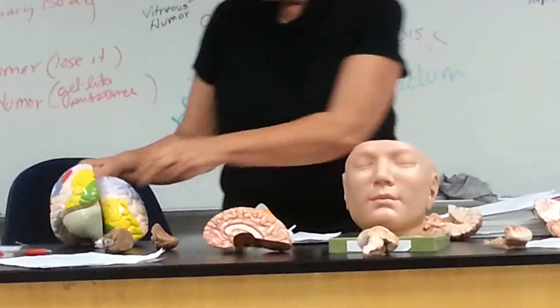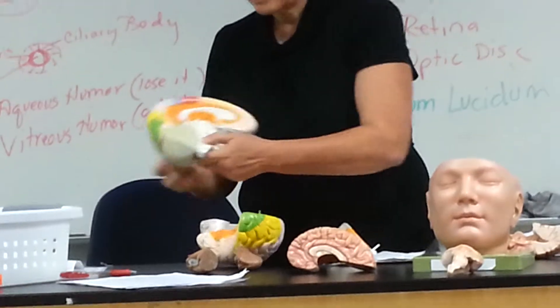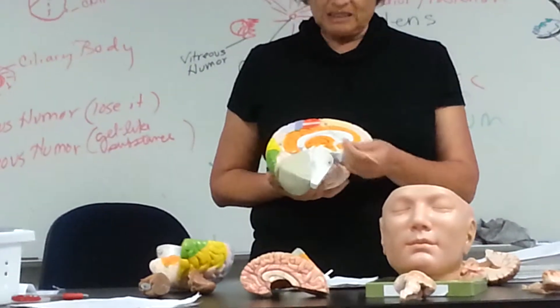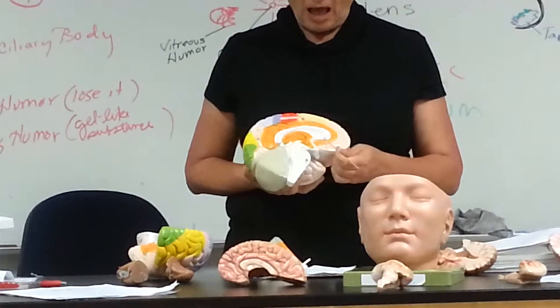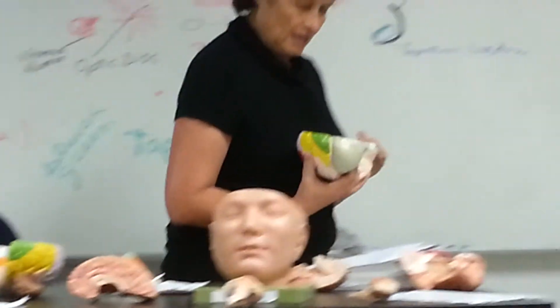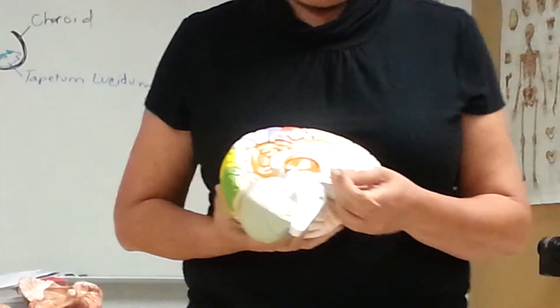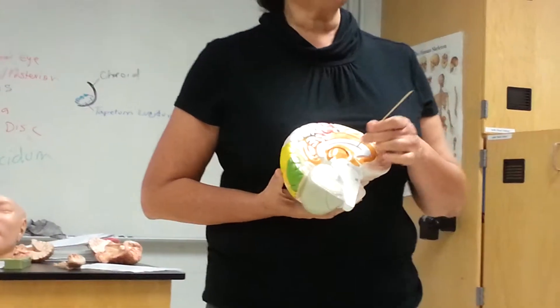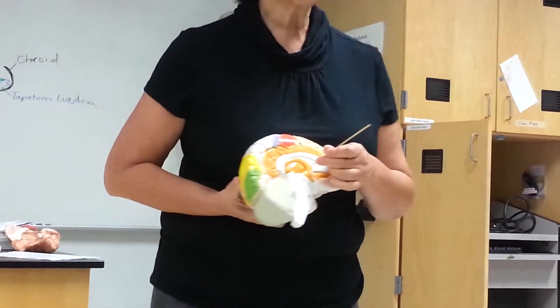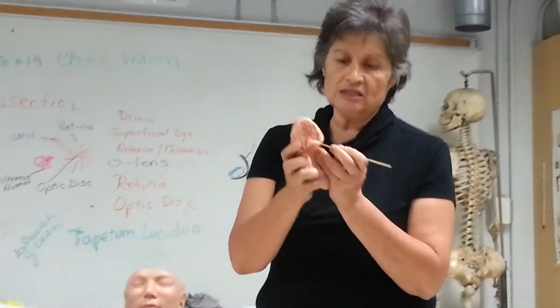Then we have the fornix. You understand that the fornix is the white matter right below the corpus callosum, and this one is colored orange. That's the corpus callosum; that's the fornix — number 45. Corpus callosum, fornix. What's number 44? Septum pellucidum. And here, that's the septum pellucidum, labeled 54.